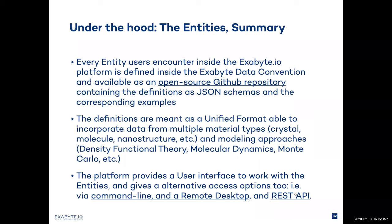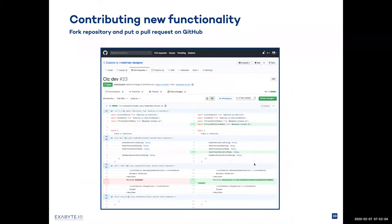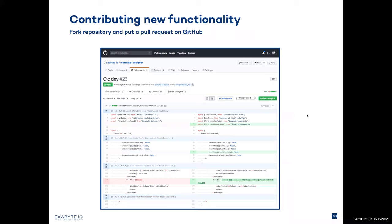The RESTful API is especially important when we speak about the data structures, because most of the time it's programmatic access. When we develop these open source parts, we would like to encourage contributions from the community. Here's an example for a materials designer repository — an example pull request on GitHub where the community has submitted certain changes for additional functionality. We encourage this type of approach and will reward the people who help us develop the code in the future.